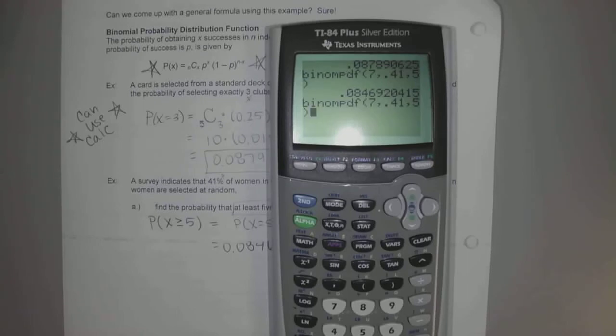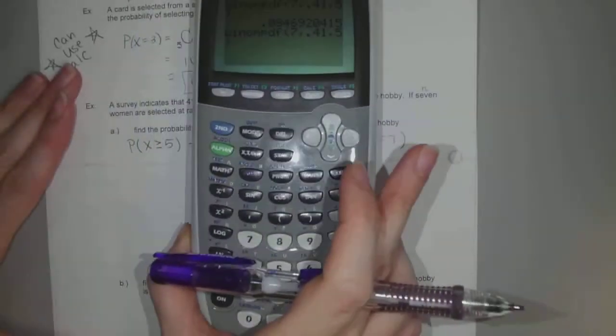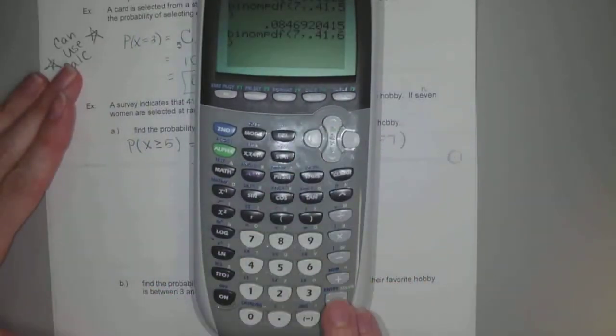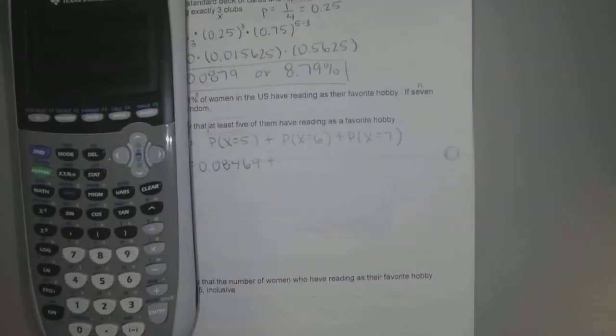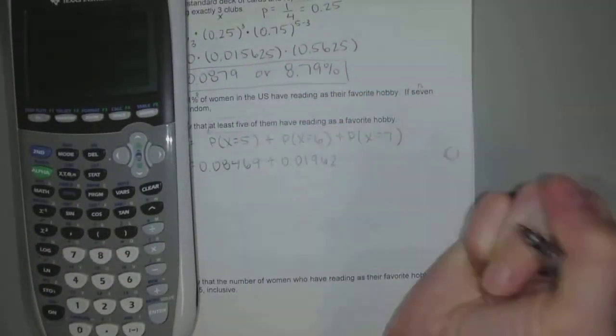But what's nice is, especially both old and new calculators, if we hit second, enter, it brings back that screen you just had. And what's the only thing we have to change? The last number, right? Because we're still asking seven ladies. The probability is still 41%. But now instead of five of them saying they like reading, what do we care about? Six. So we can just go type over our five and make it a six. And round that to five decimals, you'll get 0.01962. Does that look okay?